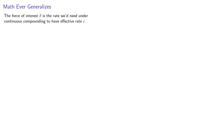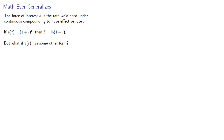So remember, the force of interest delta is the rate we'd need under continuous compounding to have effective rate i. Now if our accumulation function looks like (1 + i) to the t, then delta is log of (1 + i). But what if a(t) has some other form?